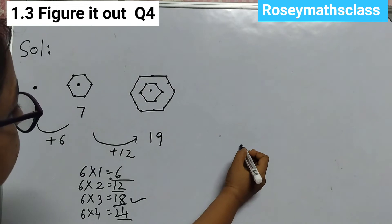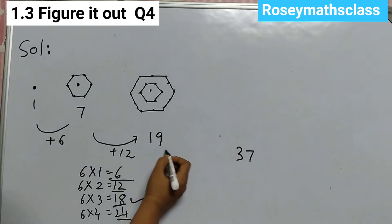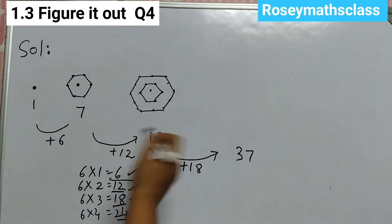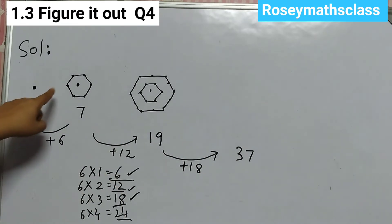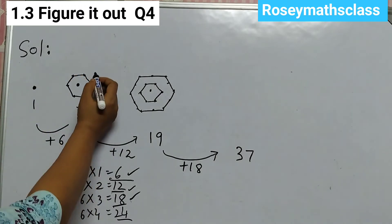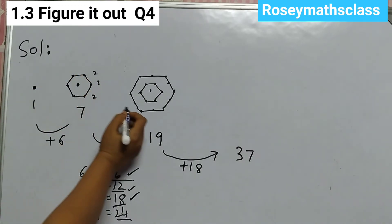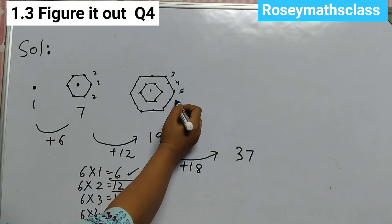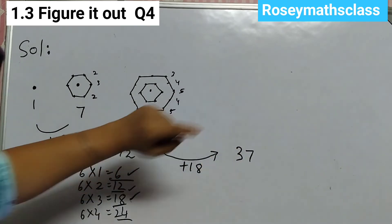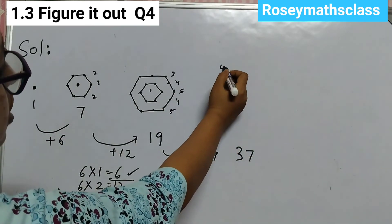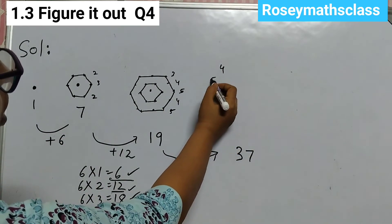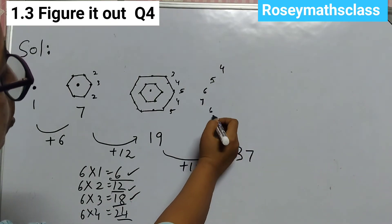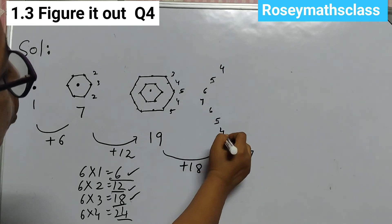So the next one will be 37 dots. That's 19 plus 18 is 37. Now, how to draw this? The pattern is: it starts with 2 dots, then 3, then 2. Here it's 3, 4, 5, and then 4, 5. So next the pattern will be 4 dots first, then 5 dots, then 6 dots, then 7 dots, and then go back down: 6 dots, 5 dots, 4 dots.